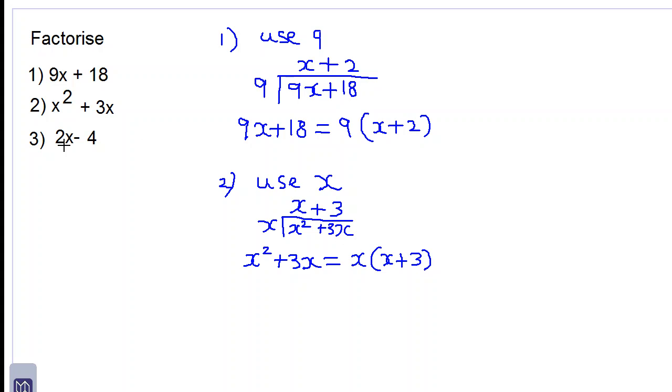Let's look at the last one, 2x subtract 4. Using 2 as the HCF, we will divide 2x subtract 4 by 2. 2 into 2x is x. Remember, we have a subtraction sign now. 2 into 4 is 2.